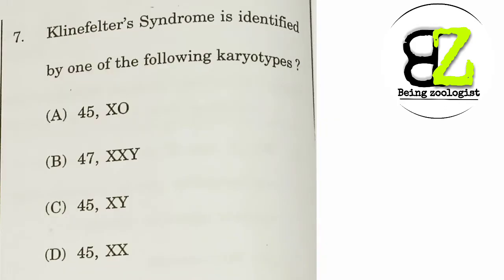Next question: Klinefelter syndrome is identified by which of the following karyotypes? Klinefelter syndrome is a trisomy, and option B shows 47 XXY. Since trisomy is only visible in option B, our answer should be option B — 47 XXY.